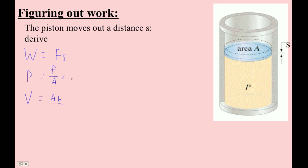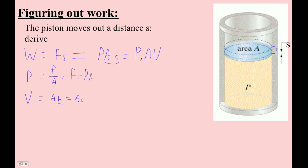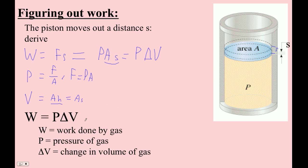So what I'm going to do here is take this and say force is pressure times area, and plug that in. So now this becomes pressure times area times s. Remember that area times height — if this height is s — I ask you to accept this as the same thing. So this is just a volume: the area times how far it moves is the change in volume. So the formula is that work equals pressure times change in volume.